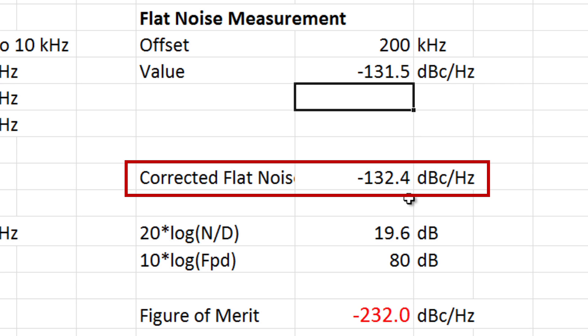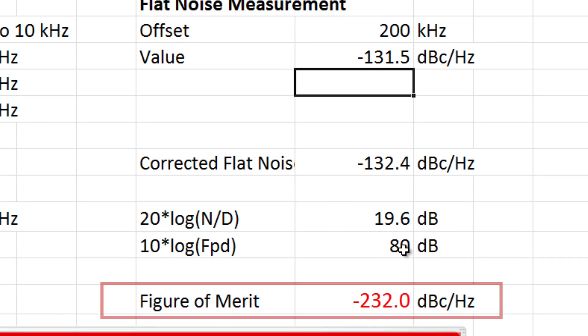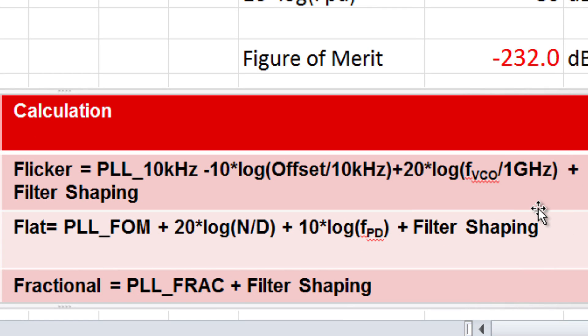Now if I take this number, subtract away 20 log N over D, subtract away 10 log phase detector, I get a figure of merit of minus 232. And recall, these are the functions we talked about, and what I'm doing is I'm actually working these formulas backward, going from a measurement to the metric, where these formulas go from the metric to the measurement.